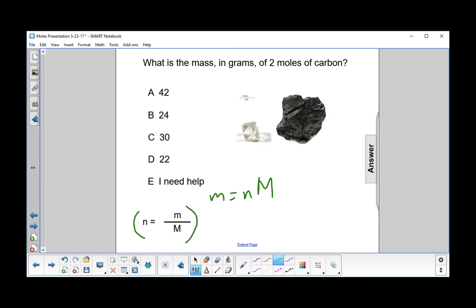You consult the periodic table and find the atomic mass of carbon is 12 amu, atomic mass units. So the molar mass is 12 grams.